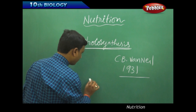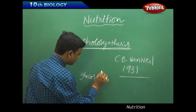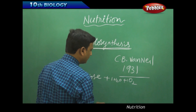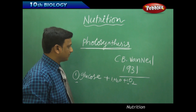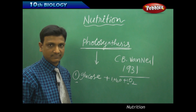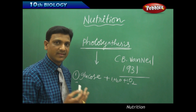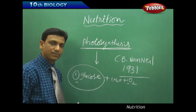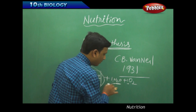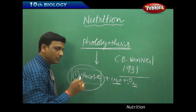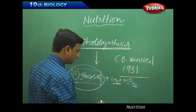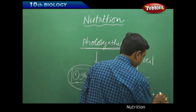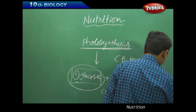He noticed that for the formation of each glucose molecule, along with the glucose molecule, one water molecule and one oxygen molecule is also produced. So photosynthesis is a very complex chemical process that takes place in plants, and the end product glucose is formed — the substance which provides energy — along with one molecule of water and one molecule of oxygen per glucose molecule. This is given in the form of an equation: carbon dioxide plus water gives rise to glucose, water, and oxygen.